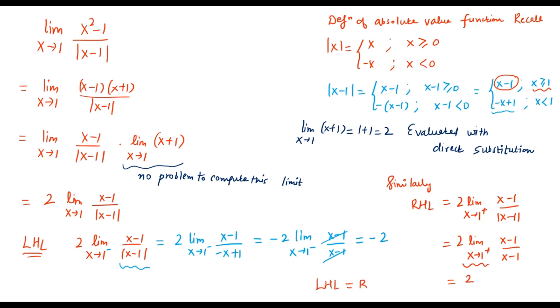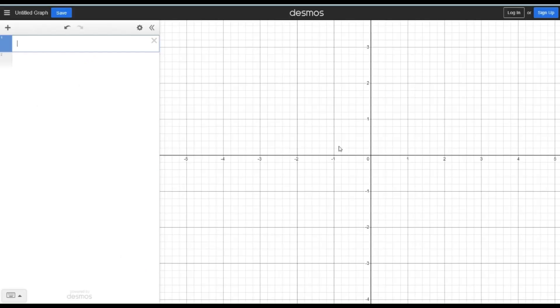Now since left hand limit is not equal to right hand limit, because minus 2 is not same as plus 2, therefore the conclusion is that the original limit which we are trying to look at does not exist. So that's an interesting way to prove.